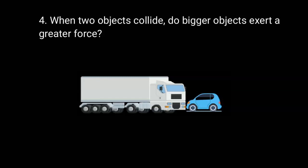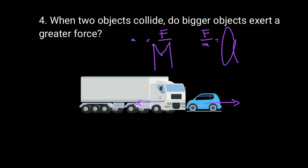The big rig exerts the same force on the little car as the little car exerts on the big rig. You might ask: isn't the effect of the collision much greater on the smaller car? Yes, and Newton's second law explains why. Using F to represent the force between the two vehicles: the big rig has a very large mass, so it has a very tiny acceleration, while the little car has a small mass and a very large acceleration. Even though the forces are the same, different masses produce different accelerations.